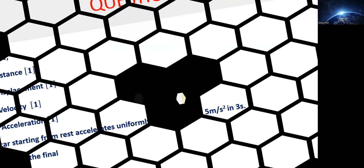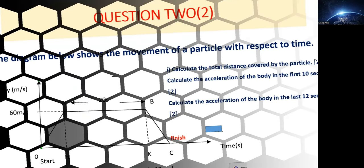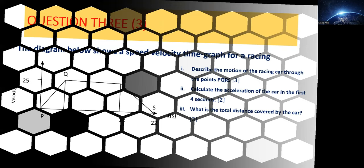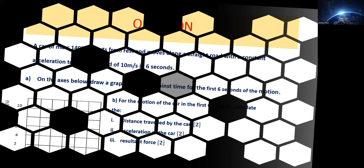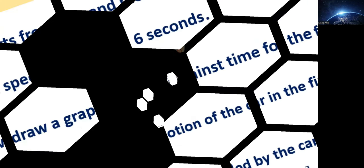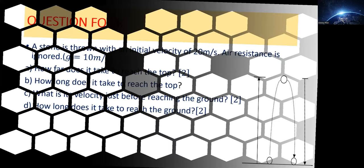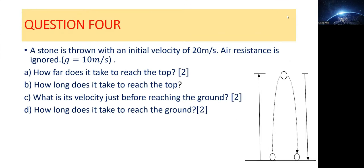Hi everyone, we are going to look at a problem that has to do with free fall. This falls under the topic of classical mechanics. When we are done with all this, it should be good to work out every problem to do with classical mechanics. The problem states a stone is thrown with an initial velocity. In physics, it's very important to develop the art of jotting down data.